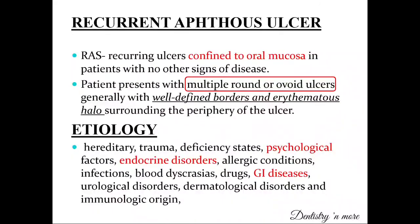Moving to the next part of the question — what is recurrent aphthous ulcer? It can be asked as a long essay or a short essay. Recurrent aphthous ulcers are recurring ulcers confined to the oral mucosa in patients with no other signs of disease. They are presented with multiple round or ovoid ulcers which generally have well-defined borders as well as an erythematous halo surrounding the periphery of the ulcer.